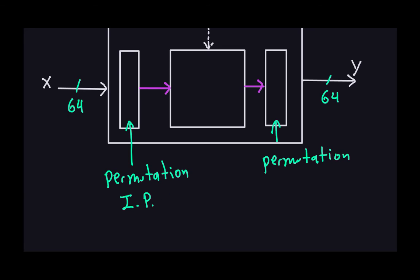The permutation at the end, right before you get the ciphertext, is called IP inverse — written as IP with a minus-one exponent. What it does is the opposite of whatever the initial permutation does.